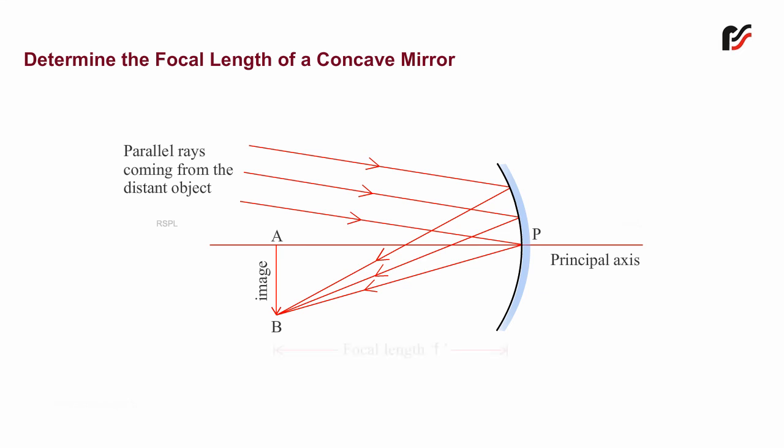The distance between the pole and principal focus of a concave mirror is called focal length of the mirror. It is equal to half the radius of curvature of the mirror.